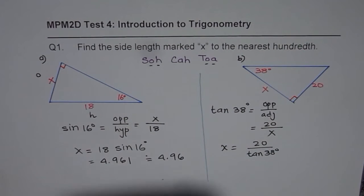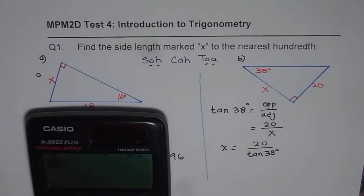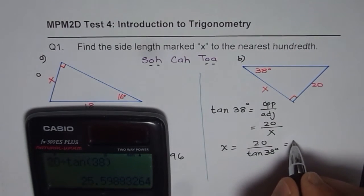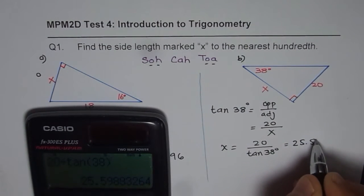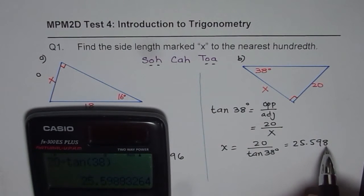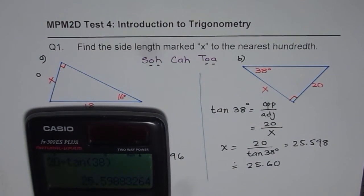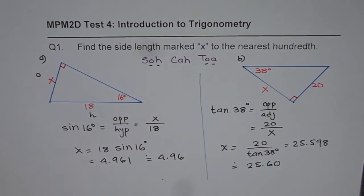So let us use the calculator and figure this out. So it is 20 divided by tan of 38 degrees, which is equal to 25.598. And rounding it to the hundredth place we get 25.60. So that is the answer for this particular question.